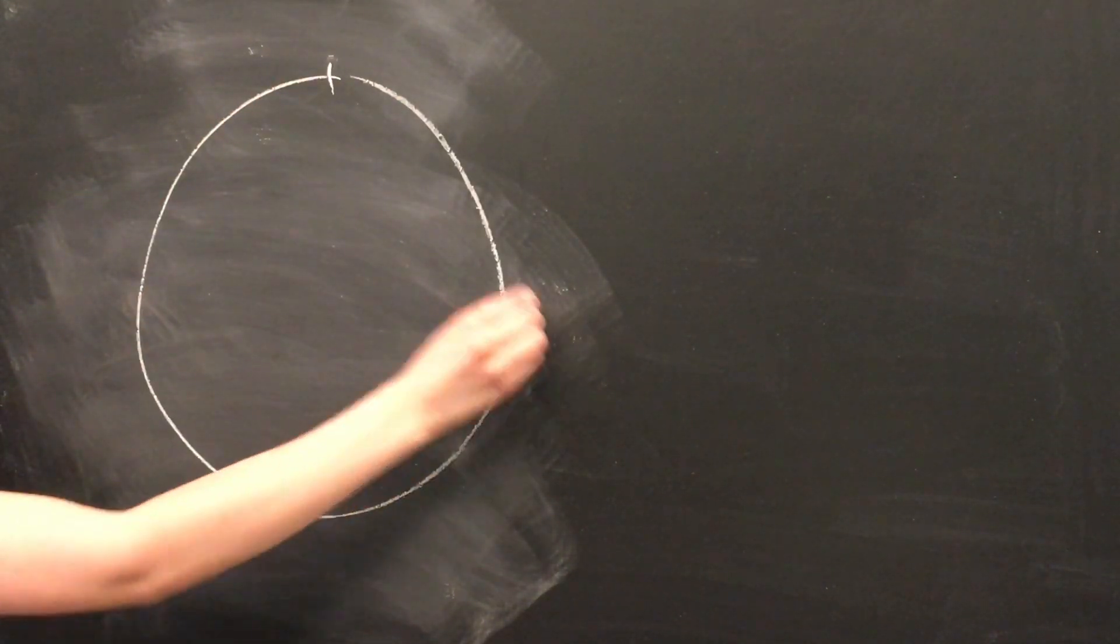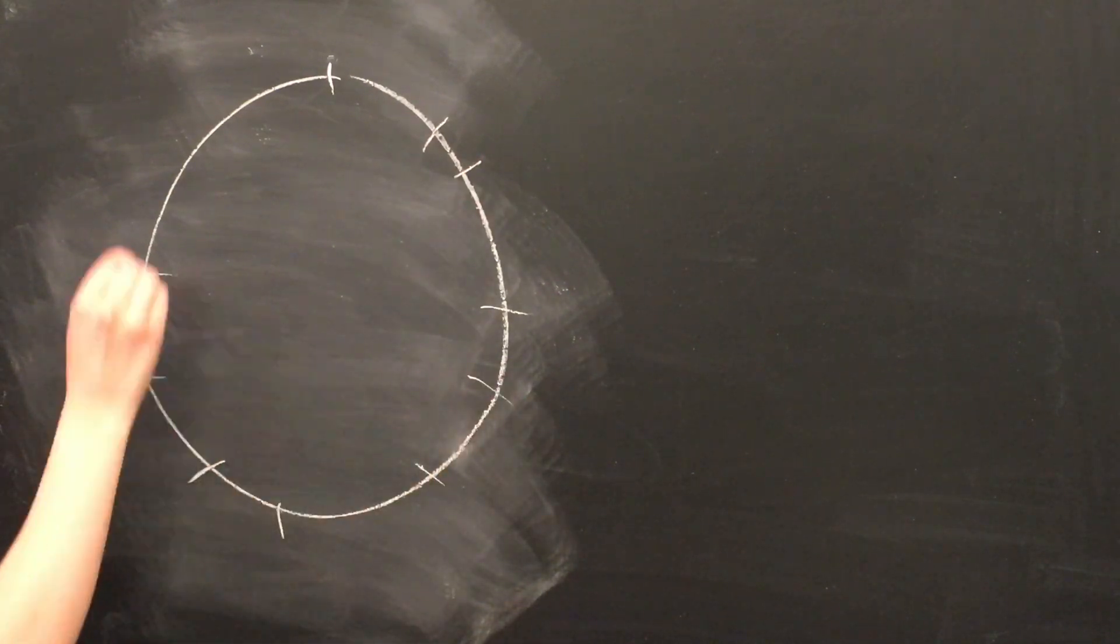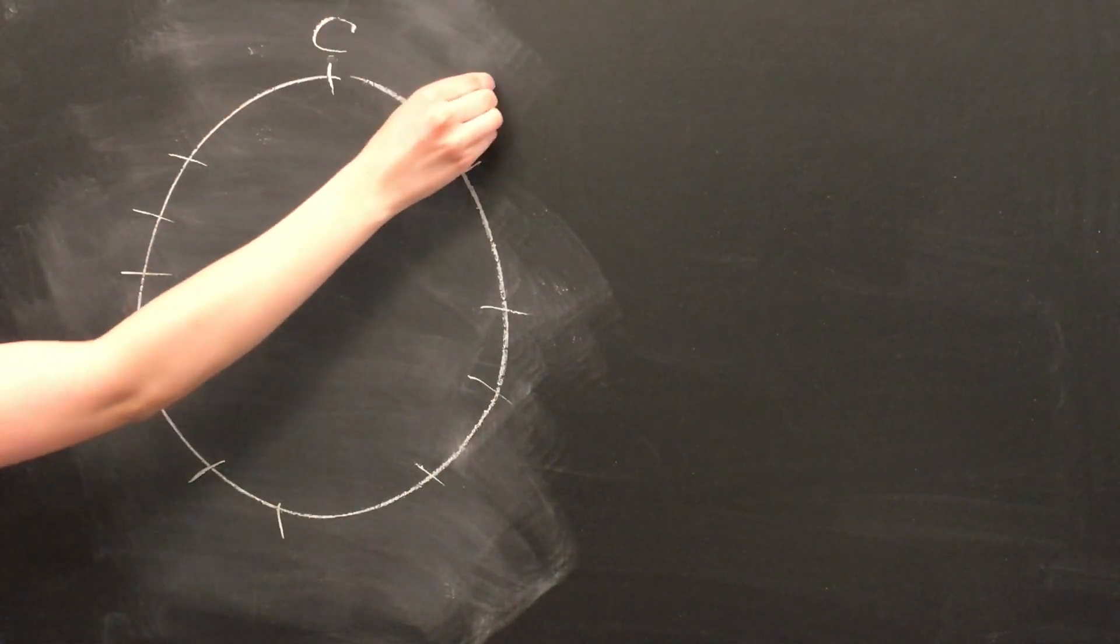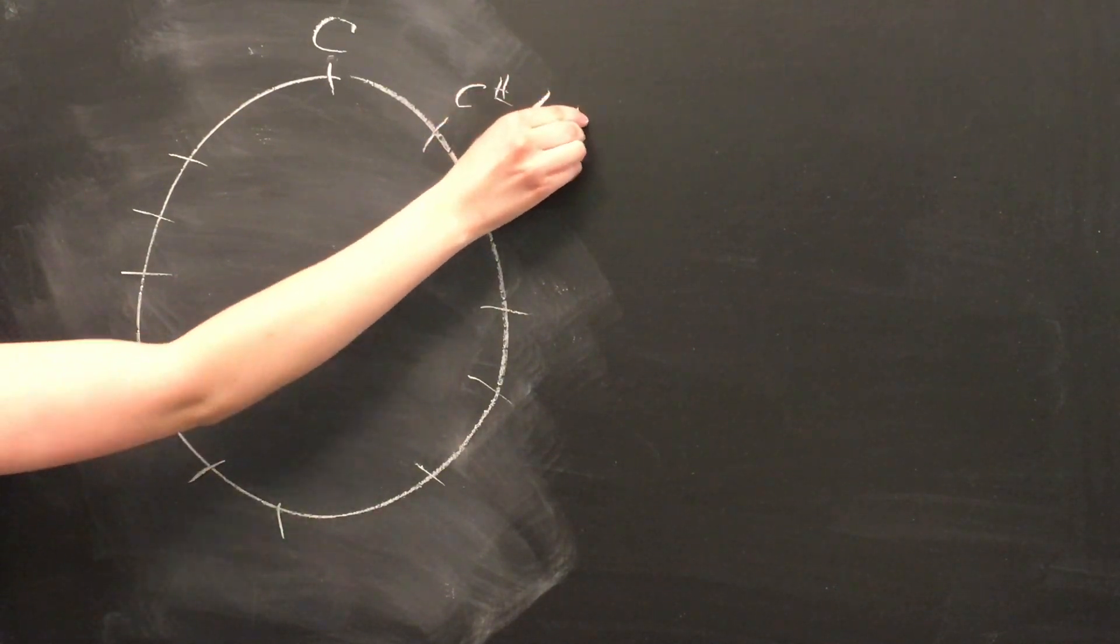Then collapse that helix down into a single circle. All we're left with now is a circle with the chromatic notes of one octave. It looks just like a clock face, but instead of numbers, we have note letters.